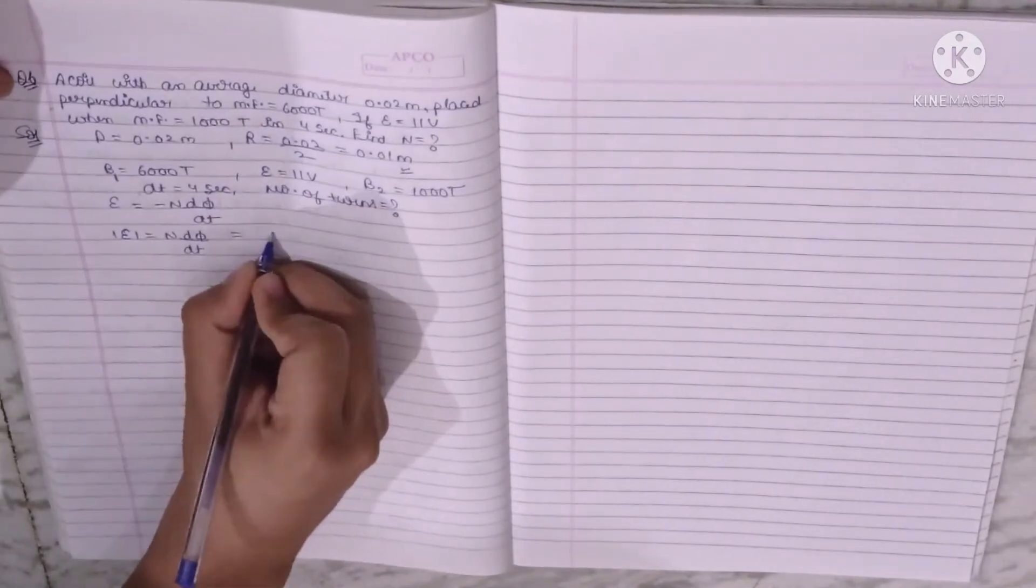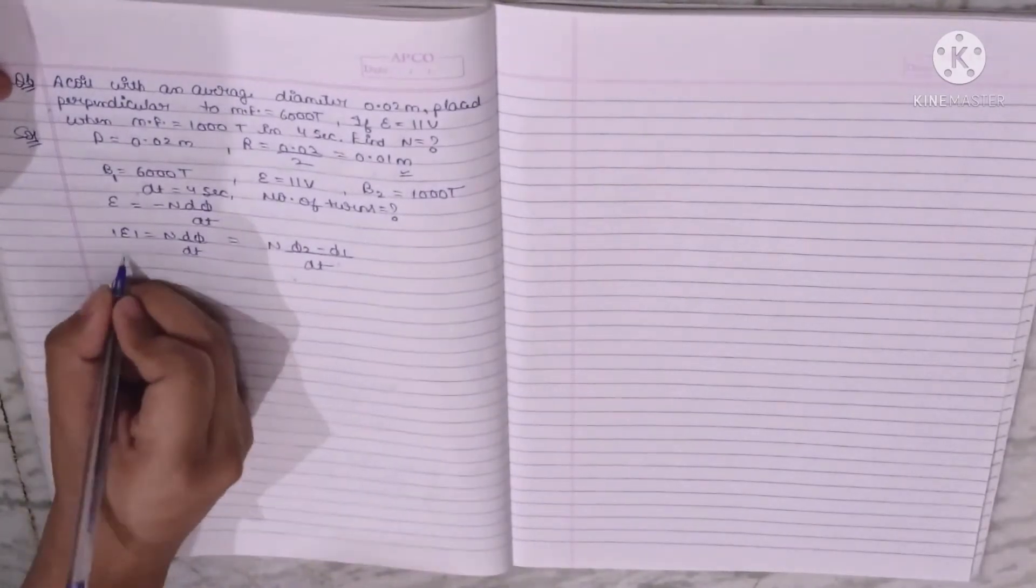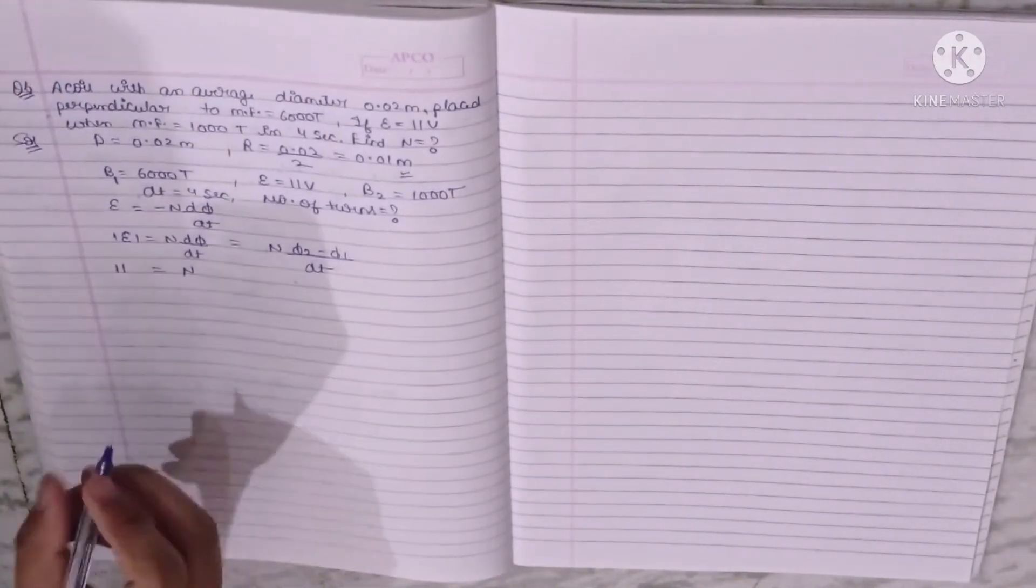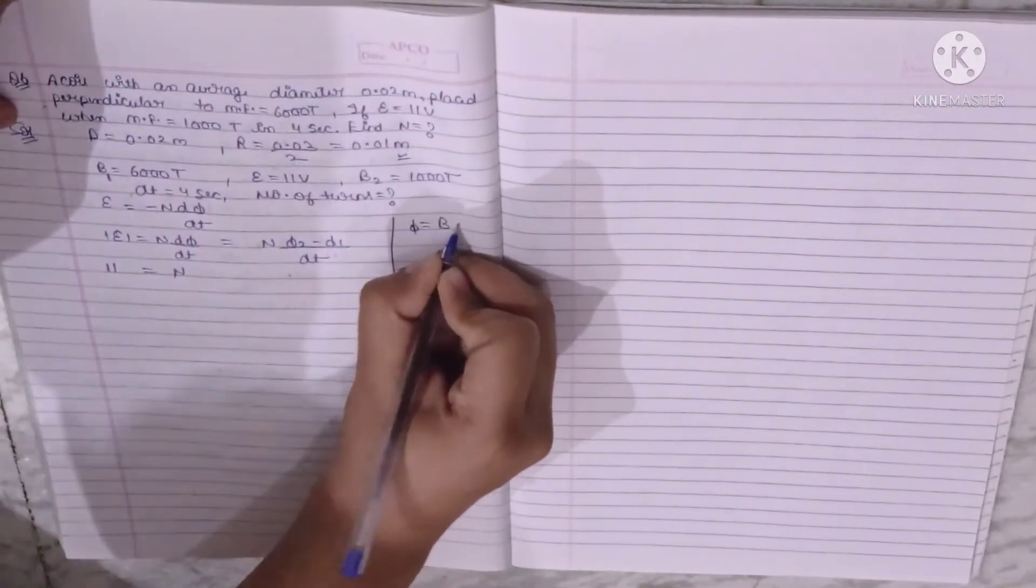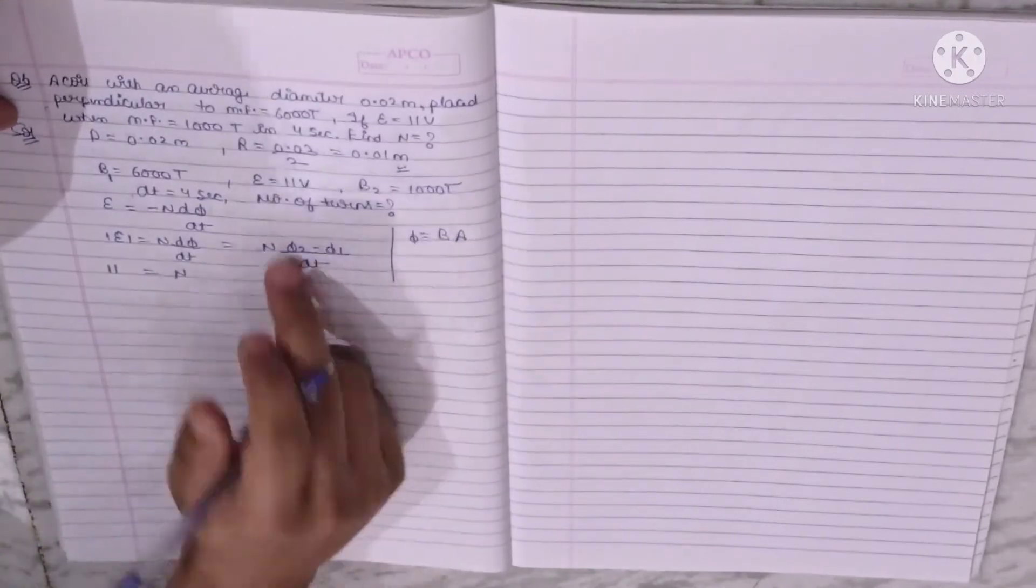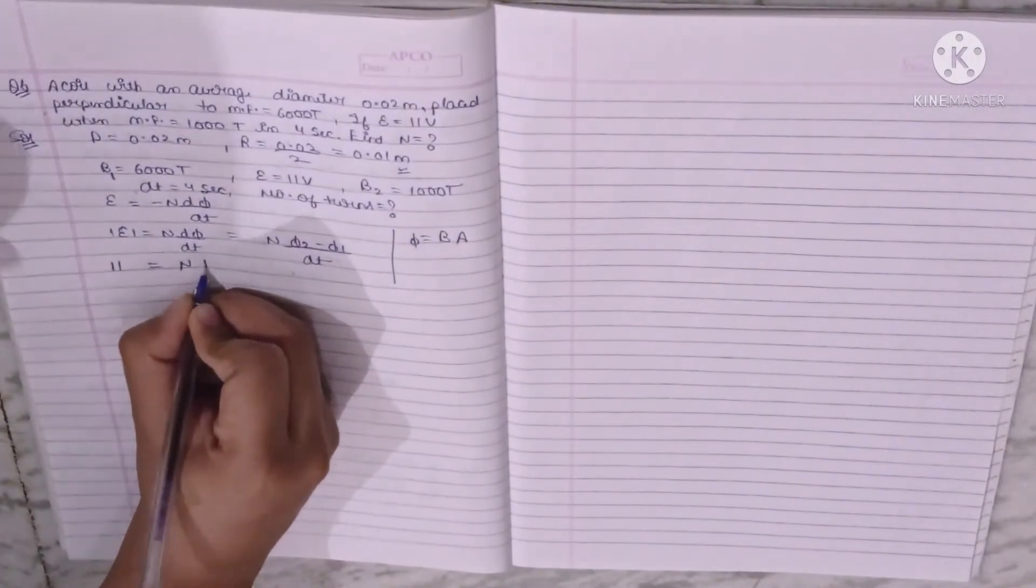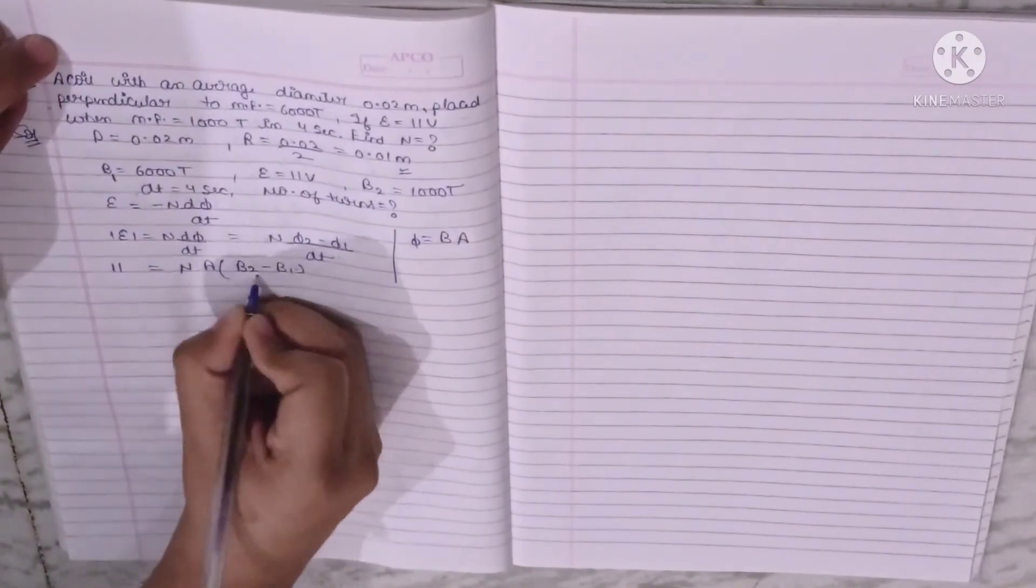So what do we write? Phi 2 minus phi 1 upon dt. EMF is equal to N. Number of turns, we can write phi 2, the area will be common, and then it will be N A into B2 minus B1 upon dt.